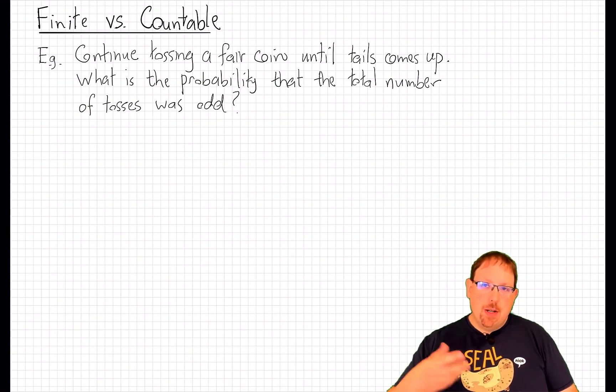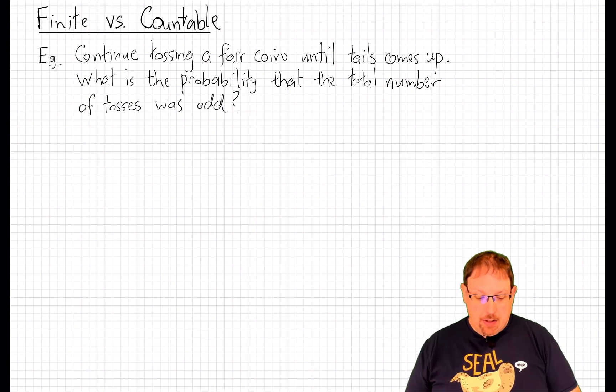But there's really no way for me to know in advance how many tosses are going to be required to get the first tails. And so I'm in a bit of a pickle. Well, I need to have a sample space that allows for an arbitrary number of tosses.